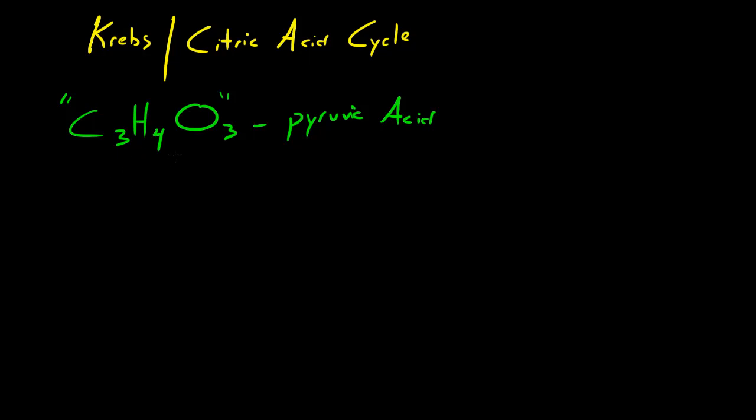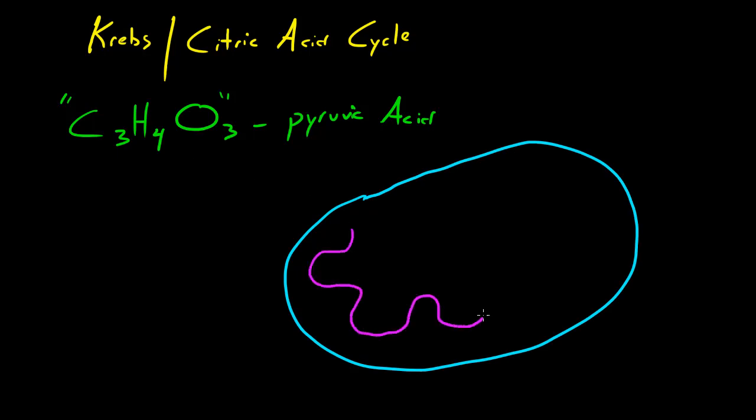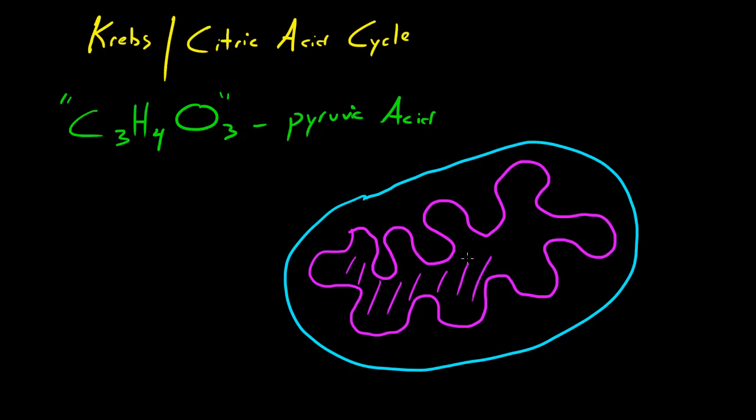After glycolysis, these pyruvic acid molecules—remember we have two of them—they head over to the interior of the mitochondria. Here's the mitochondria with the outer membrane and inner membrane. This stuff in here is called the matrix, a bunch of fluid inside here. The matrix is where the Krebs cycle is going to be performed, but we'll get to that in a second.